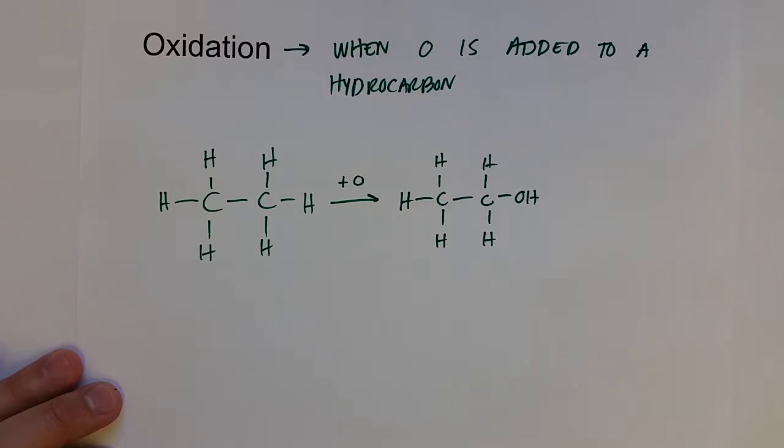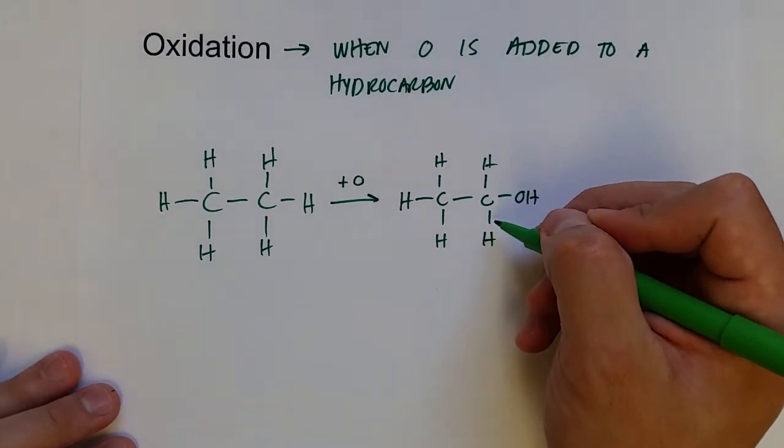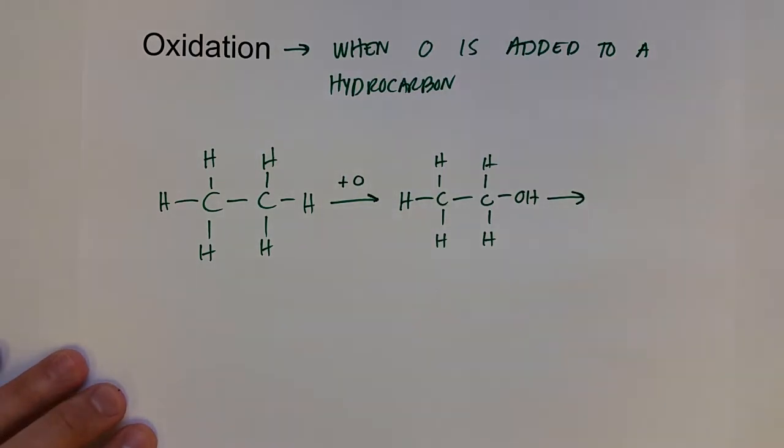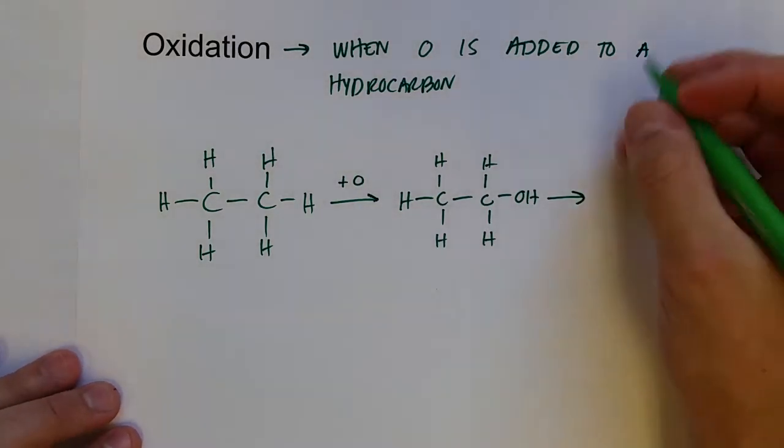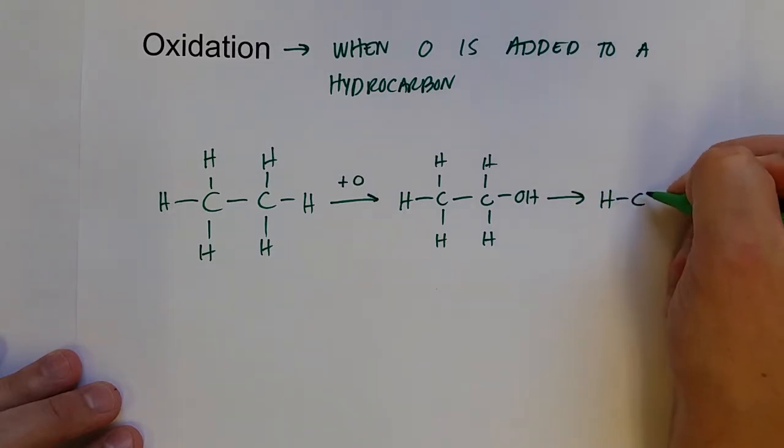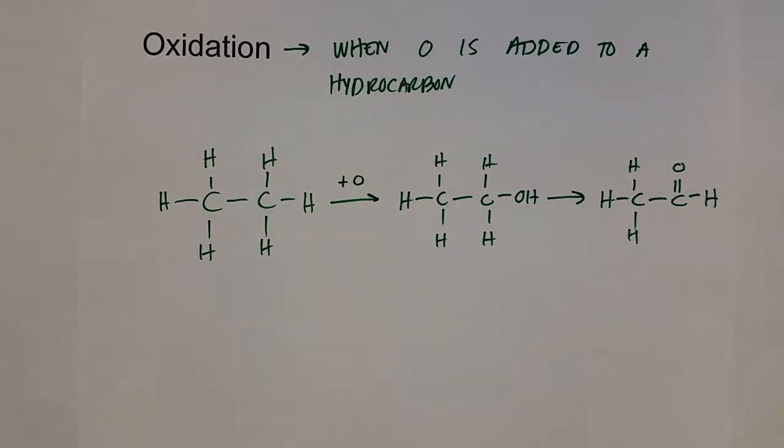Further oxidation would be removing one of the hydrogens and actually creating a double bond between the carbon and oxygen. And so that would look like this, a further oxidation reaction. We're not adding oxygen, but we're changing it from an alcohol to an aldehyde.